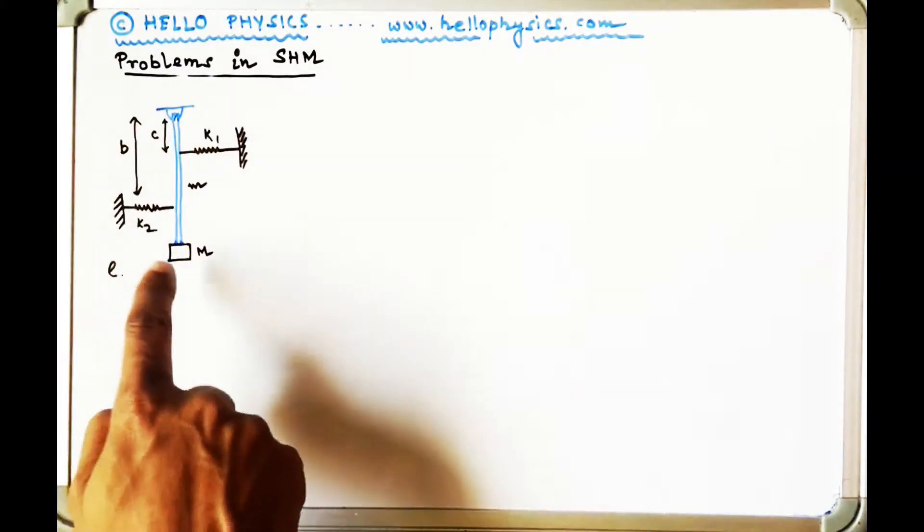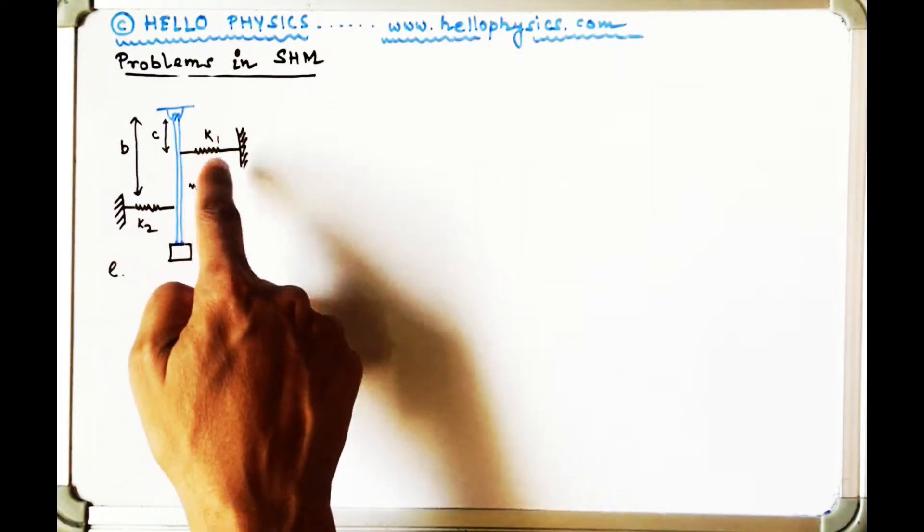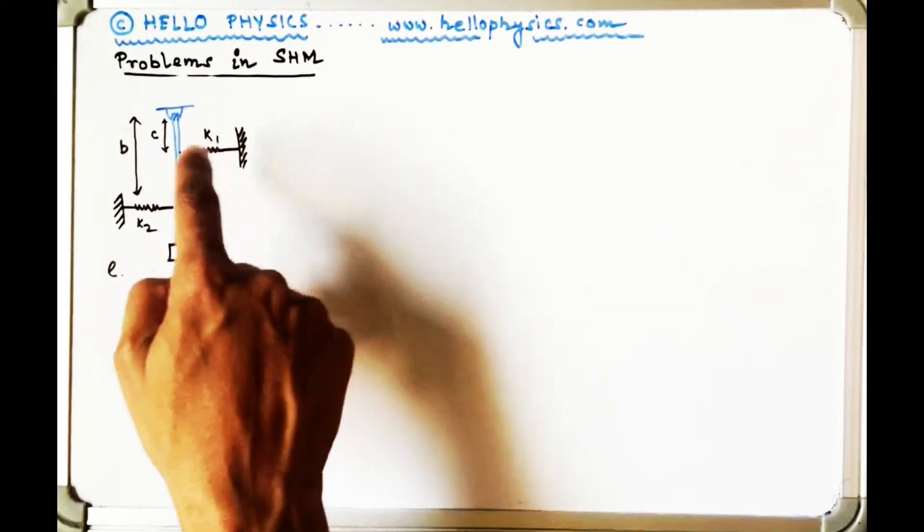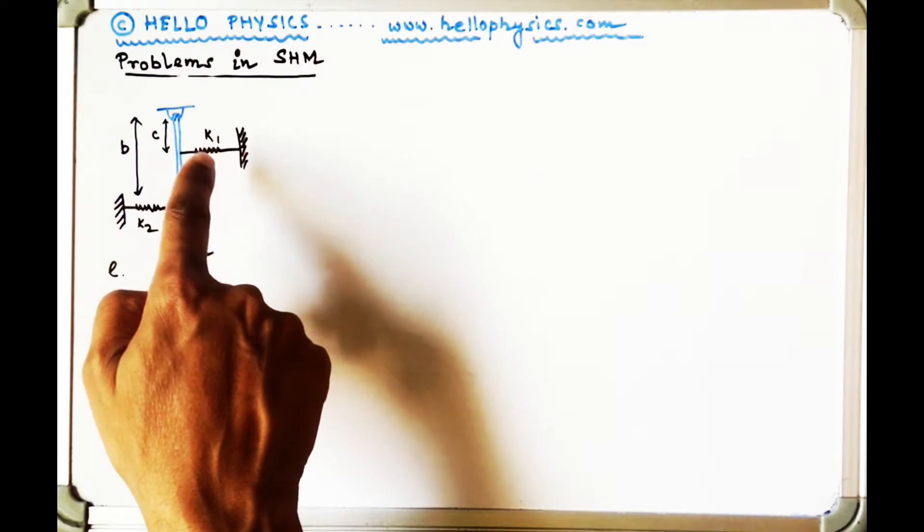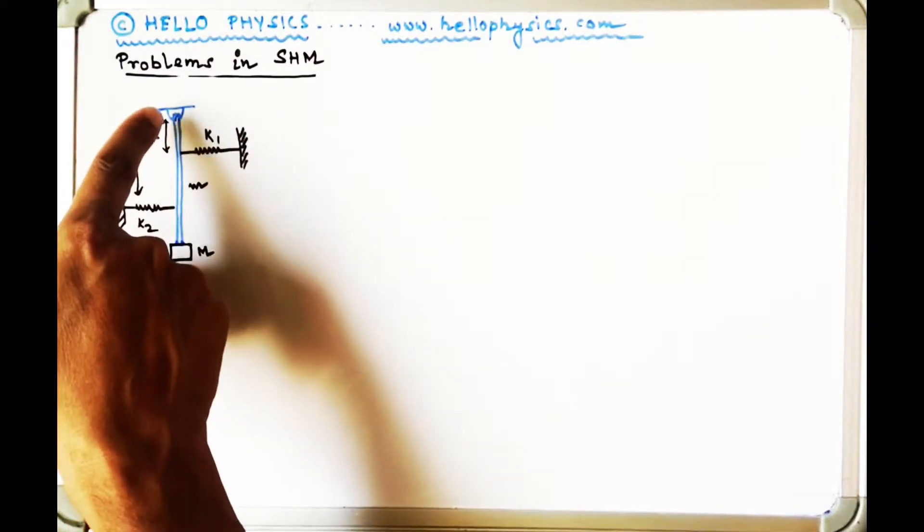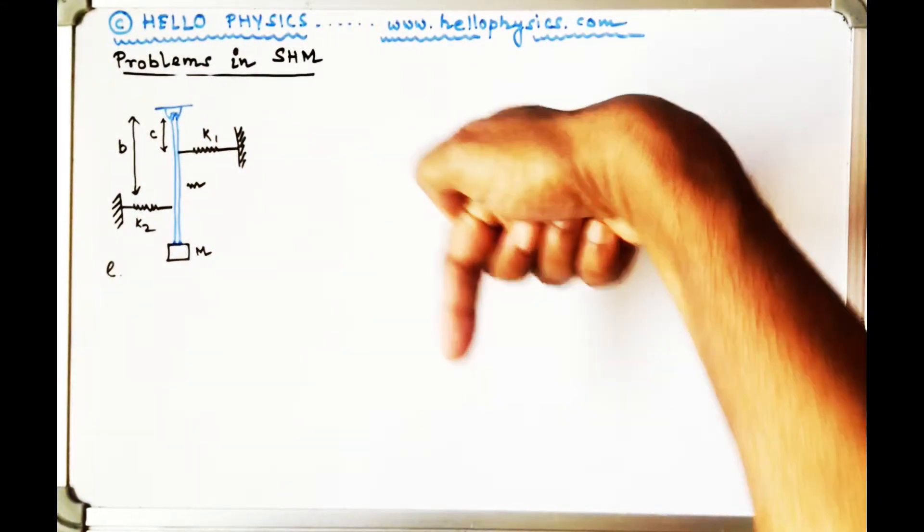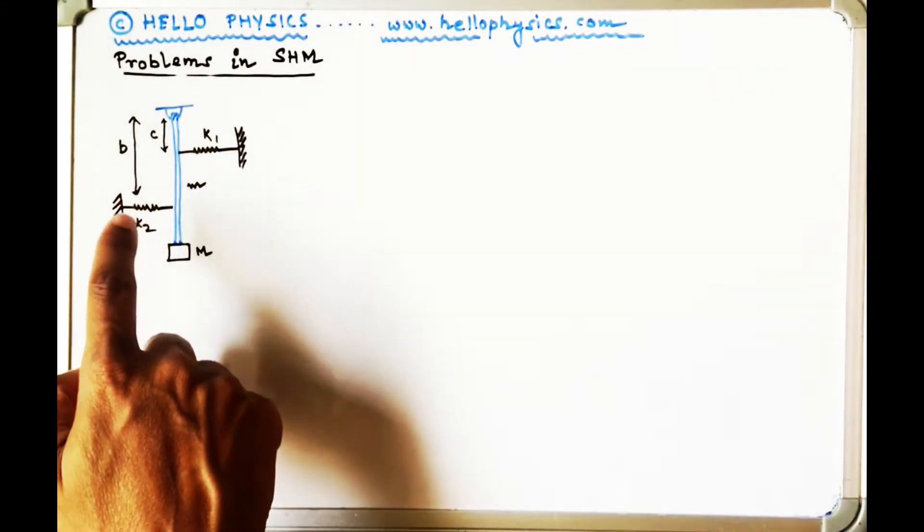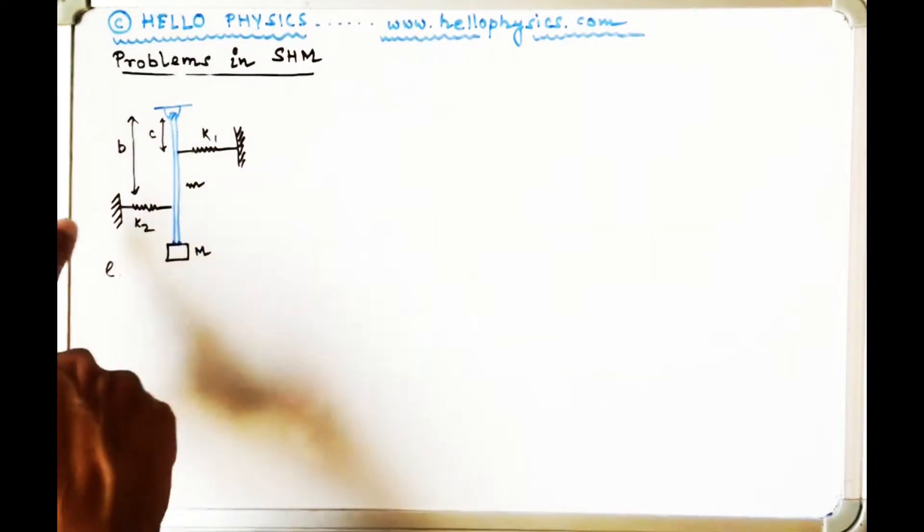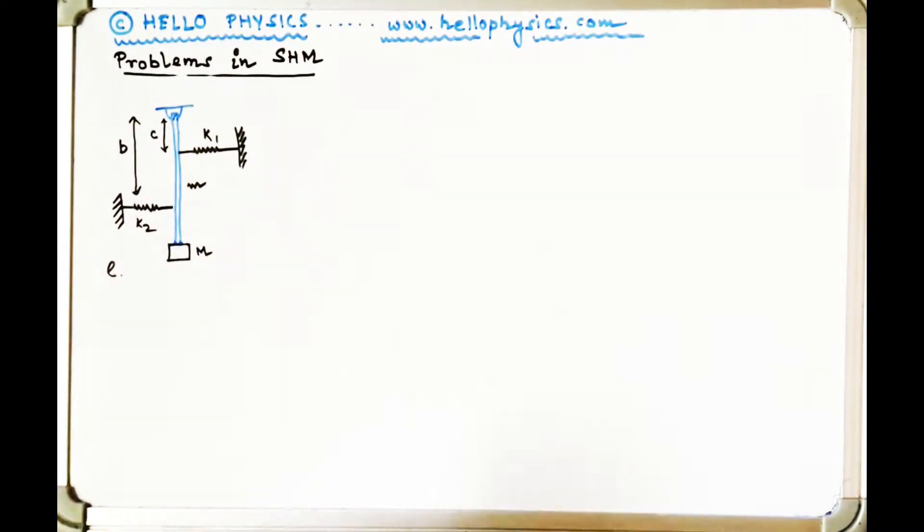Next, the stick is connected to two springs on either side, one spring has a spring constant of k1 at a distance of c from the point from which the stick is hung, and the other spring is at a distance of b with a spring constant of k2.